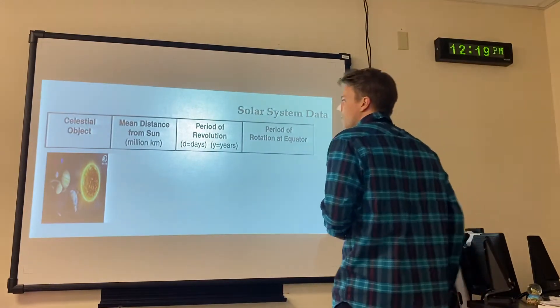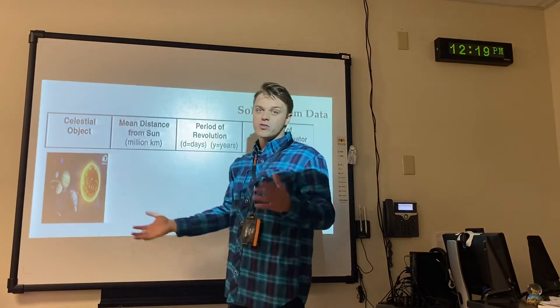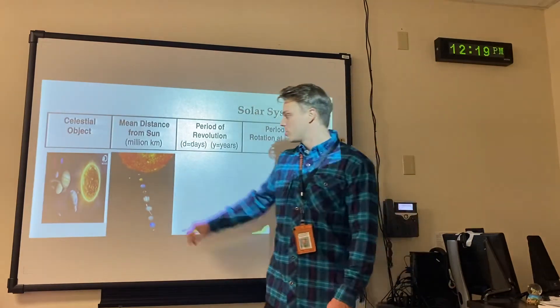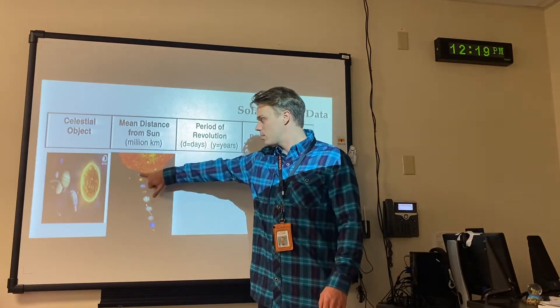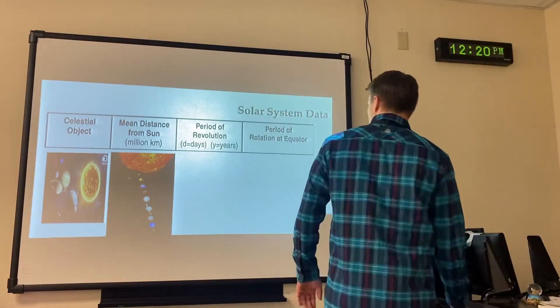Mean distance from the Sun. If you drop the word mean, which just really means like average, distance from the Sun is going to be in millions of kilometers. So Mercury is the closest to the Sun, so it's got the least distance. Neptune is the furthest from the Sun, so it has the most distance.